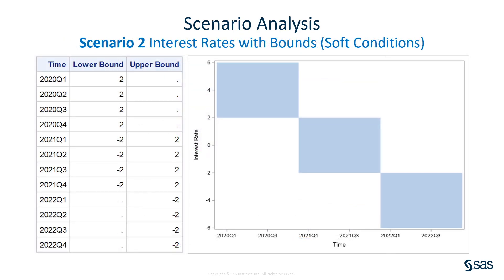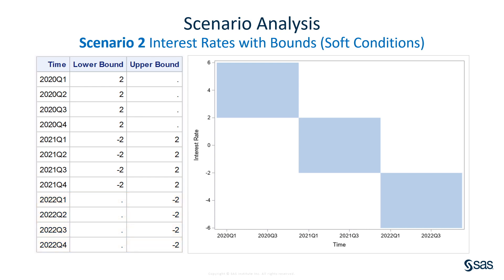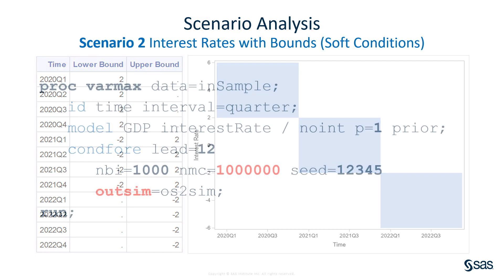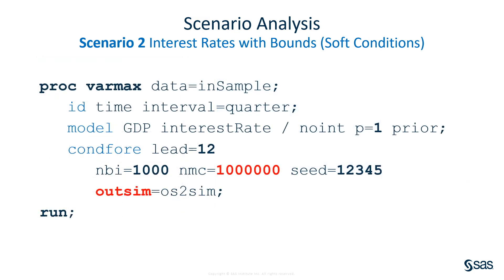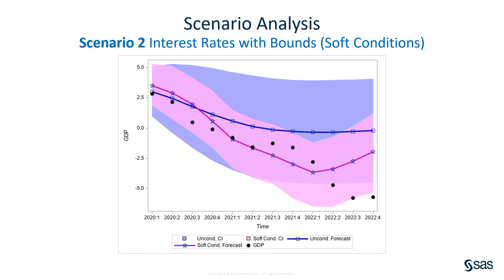Let's move on to the second example. In this example, the scenario is defined by bounds, not exact values. Here, the interest rate is above 2 in 2020, between negative 2 and 2 in 2021, and below negative 2 in 2022. Let PROC VARMAX handle the Conditional Forecast for this scenario. Here is the Conditional Forecast for Scenario 2. As the plot shows, it's different from and better than the unconditional forecast.